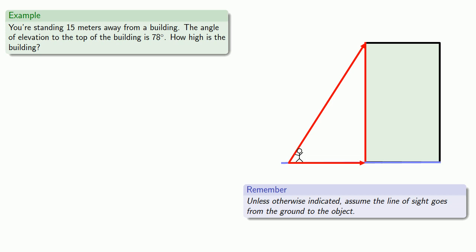We know the angle of elevation is 78 degrees. We know the distance from the building is 15 meters. And again, unless otherwise indicated, we can assume that that's the length of this line from the building to the vertex of our line of sight angle.